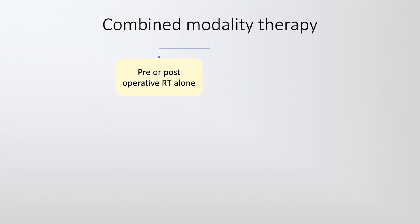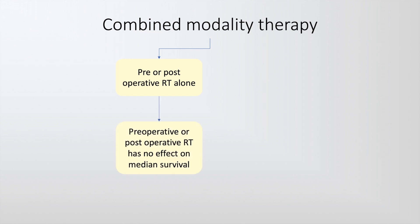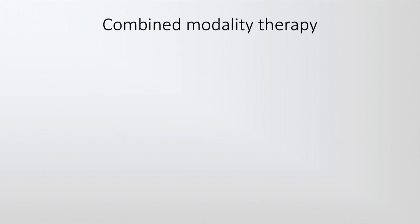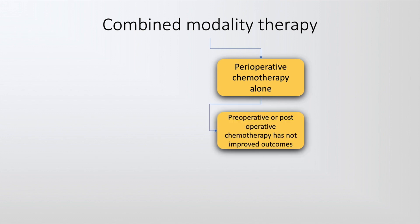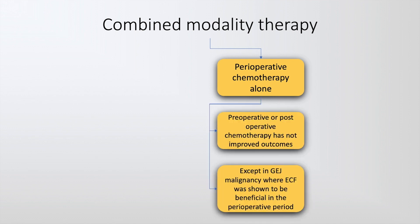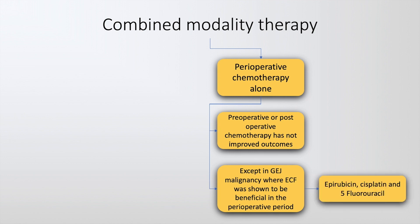Pre- or post-operative radiotherapy alone is generally not practiced because of no effect on median survival. Similarly, perioperative chemotherapy alone did not improve outcomes. However, it has some role in gastroesophageal junction tumors where ECF was shown to be beneficial in the perioperative period. ECF stands for epirubicin, cisplatin, and 5-fluorouracil.